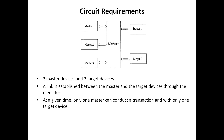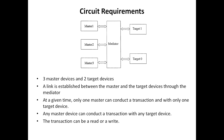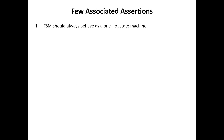With only one target device, any master device can conduct a transaction with any target device. The transaction can be read or write. Finally, the arbiter uses a simple round-robin technique to give access to masters. These are the requirements of the system.